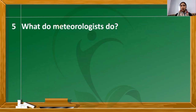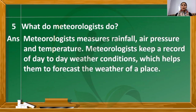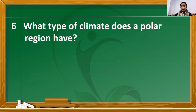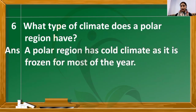Fifth question: what do meteorologists do? Meteorologists measure rainfall, air pressure, and temperature. They keep a record of day-to-day weather conditions, which helps them to forecast the weather of a place. Sixth question: what type of climate does a polar region have? A polar region has cold climate as it is frozen for most of the year.